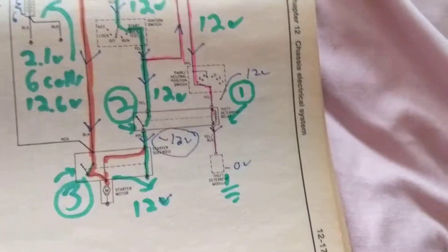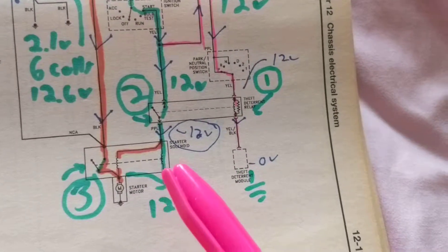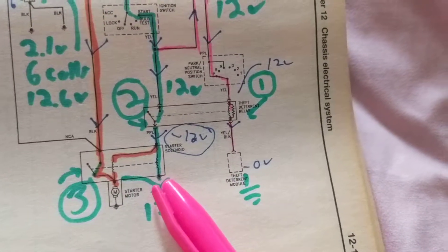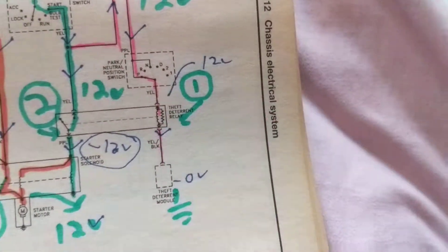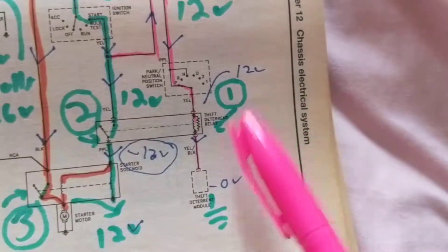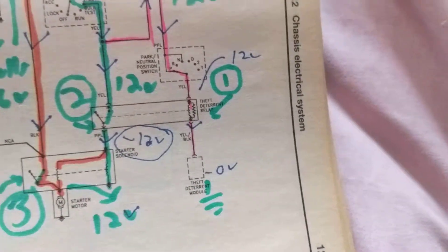A little complicated because we have this relay working in order to make this starter solenoid work. Welcome to the world of theft deterrent relay. That's why. You have to activate this through the module. Now, I'm going to continue the video of the customer complaint.